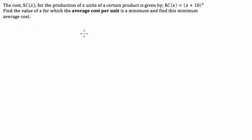Find the value for x for which the average cost per unit (now that's in bold because the question also put it in bold, so I just thought I'd copy it straight in as the question was written) is a minimum and find this minimum average cost.